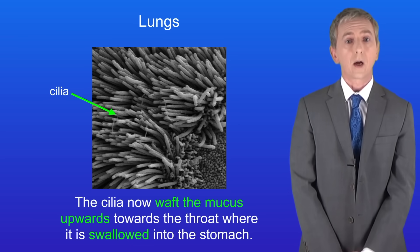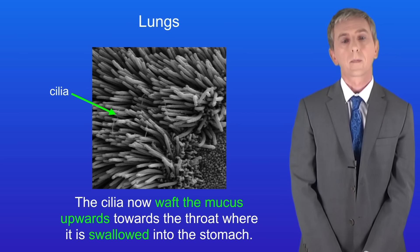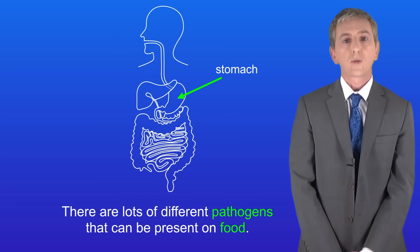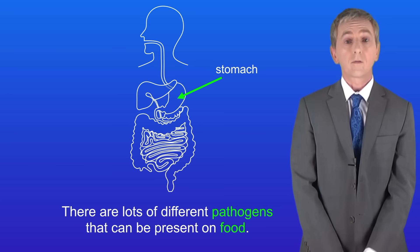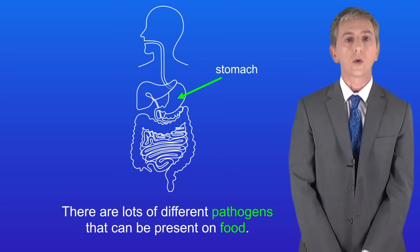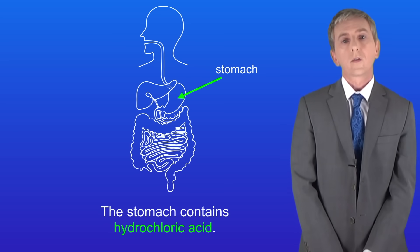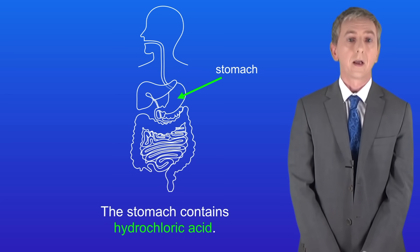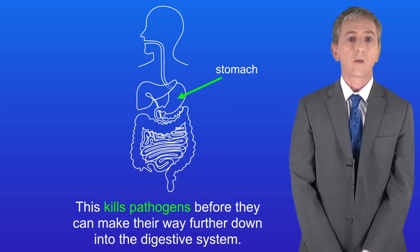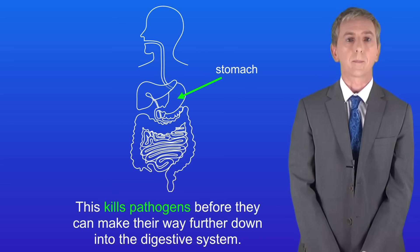We're going to finish by looking at how the stomach defends us against pathogens. A good example of a disease caused by a pathogen is salmonella food poisoning, and in fact there are lots of different pathogens that can be present on food. So to protect us, the stomach contains hydrochloric acid, which kills pathogens before they can make their way further down into the digestive system.